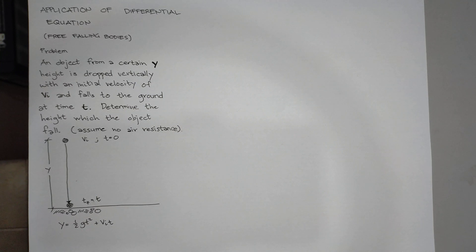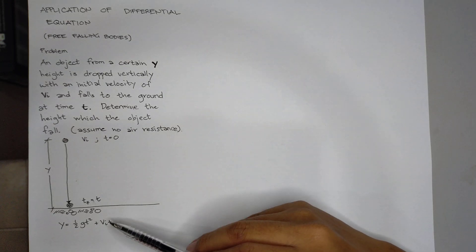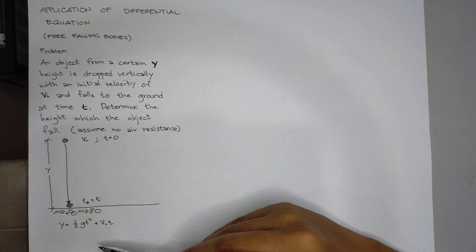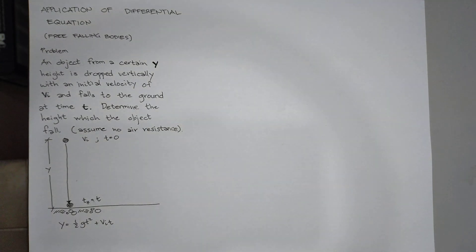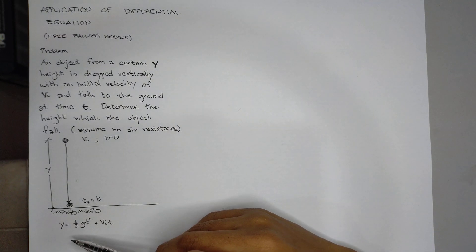One of the applications of differential equations is free-falling bodies. We know that to determine height, we have the formula 1/2 g t² + vi t, where y is the height,